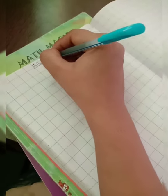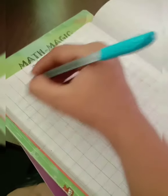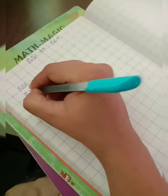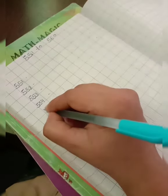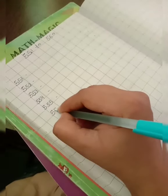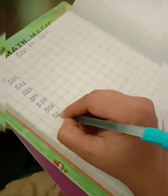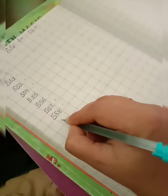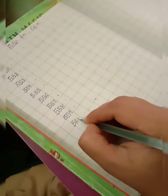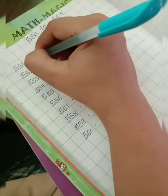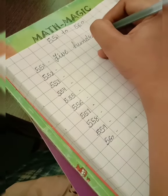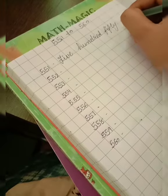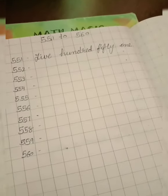Now we will write 551 to 560. Let's start: 551, 552, 553, 554, 555, 556, 557, 558, 559, and 560. So F-I-V-E 5, H-U-N-D-R-E-D 100, F-I-F-T-Y 50, O-N-E 1. 551.